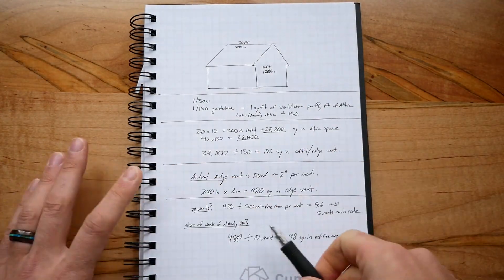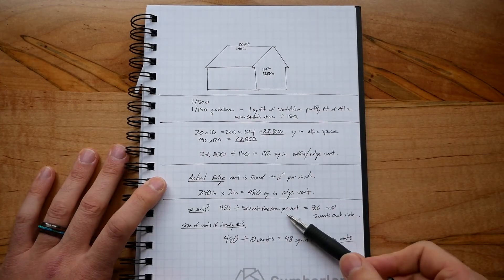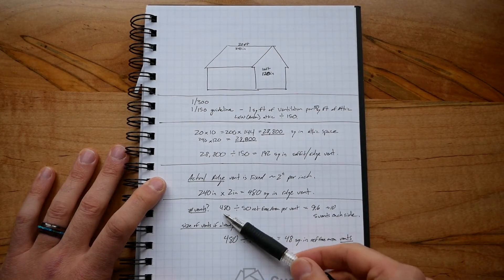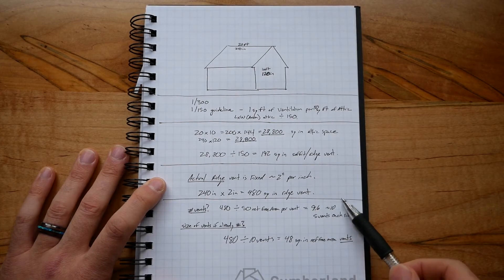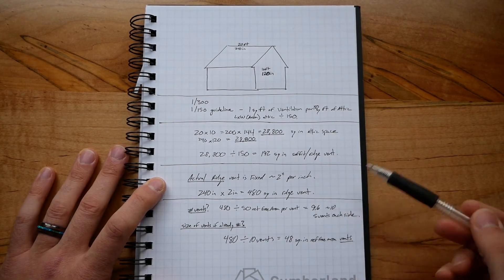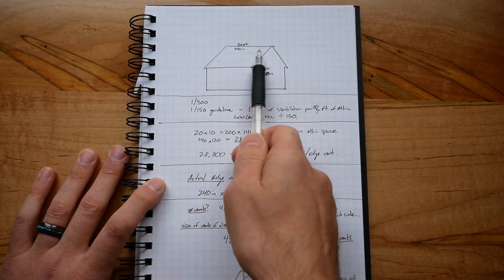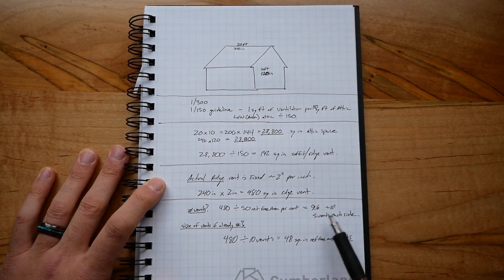Assuming we have these 50 net free area vents, we divide 480 by that 50 and we get 9.6 or about 10 vents. So we would need about 10 vents on the soffits to ventilate that ridge, and that'd be five on each side.